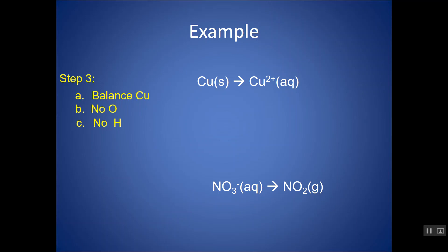The last step is to balance charge. We use electrons to balance charge because electrons have negligible mass. There's a 2+ on the right and zero on the left, so I add two electrons to the right-hand side so the charge is the same on both sides — zero on the left and zero on the right. You're adding electrons to the more positive side. Don't write e²⁻; put the 2 in front as a coefficient. This is now a correctly balanced half reaction for copper.